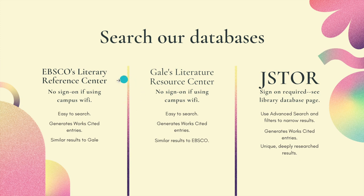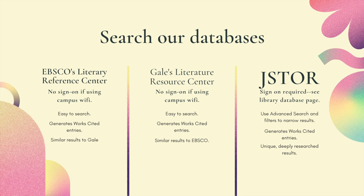If you can't find what you're looking for on those two, move on to JSTOR. JSTOR will require you to sign in — remember the link on the previous page. I recommend Advanced Search, maybe even using some filters to narrow your results. It also will generate your works cited entry. The sources there will be deeply researched and unique; they won't sound just like what you find on the other two. EBSCO is very similar to Gale, so I'm going to give you a brief example of how I would search using my keywords on JSTOR.